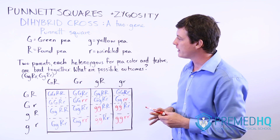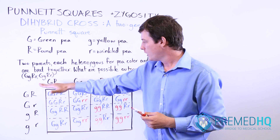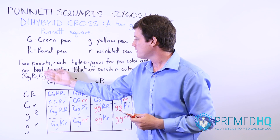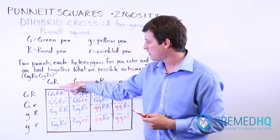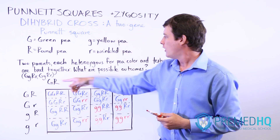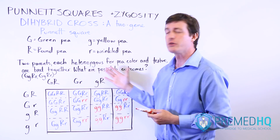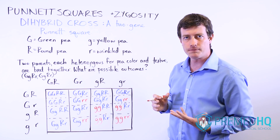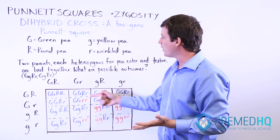With that in mind, and keeping in mind that each parent will be passing on one of their G alleles and one of their R alleles, we can now assemble this dihybrid cross Punnett square with all of these variations. The mother can pass on capital G and capital R, capital G and lowercase r, lowercase g and capital R, or lowercase g and r — and these all occur with equal frequency. The same goes for the father's alleles.